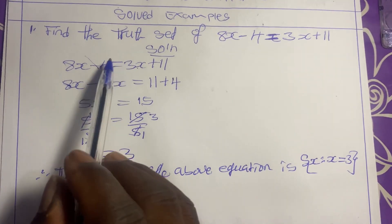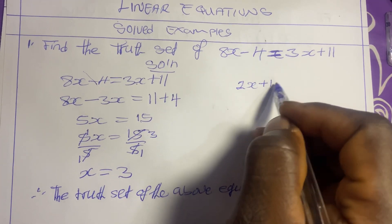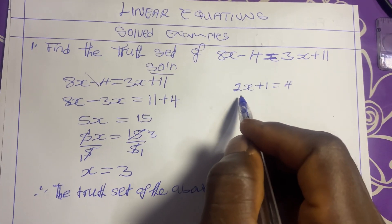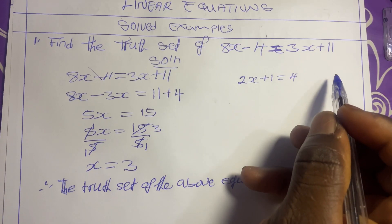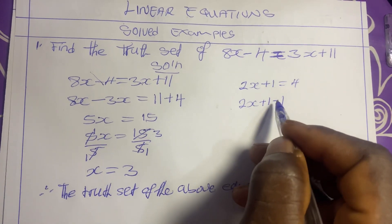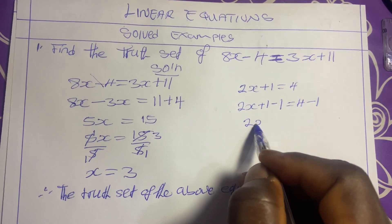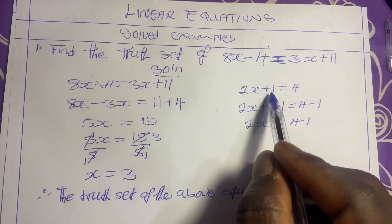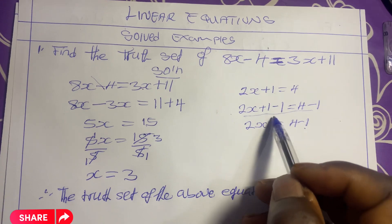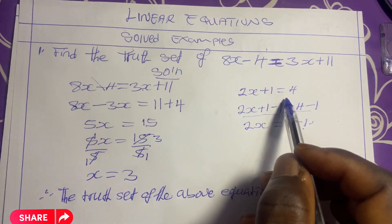Let's explain the theory behind moving terms across the equals sign. When we have 2x plus 1 equal to 4 and we want to move the 1 to the other side, we subtract 1 from both sides: 2x equals 4 minus 1, which is why the 1 becomes negative when moved across. Conversely, a negative term becomes positive when moved across. You can verify this by adding 1 to both sides to reverse the operation.